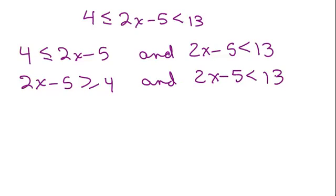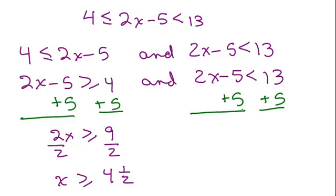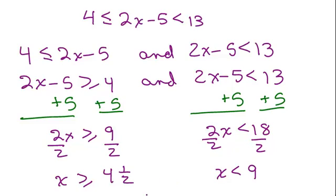Then I could solve each of these. For the left part, I add 5 to both sides, giving 2x is greater than or equal to 9, then divide by 2, so x is greater than or equal to 4 and a half. For the right-hand side, I add 5 giving 2x is less than 18, then divide by 2, so x is less than 9. So I've got: x is greater than or equal to 4 and a half AND x is less than 9.